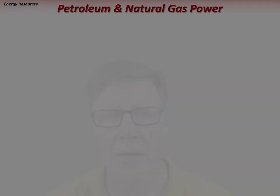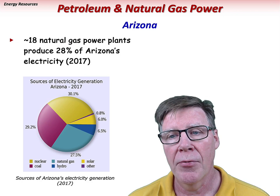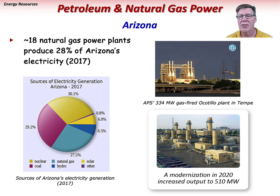Arizona has about 18 natural gas power plants that produce about 28% of its electricity. Two large electrical utilities operate gas-fired power plants across Arizona: Arizona Public Service (APS) operates the gas-fired Ocotillo plant in Tempe, just east of ASU; and the Salt River Project (SRP) runs the 2,200-megawatt Gila River power station in Gila Bend.